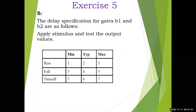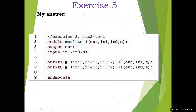Looking at the answer, the module name is mux2to1. Output is OUT, inputs are In1, In0, and select line S. Only one output and three inputs. Using BUFIF1 and BUFIF0 format, delay is included using the rise delay with minimum, typical, and maximum values. The colon operator is used between min:typ:max values and a comma between each delay specification. So: 1:2:3, 3:4:5, 5:6:7 — meaning rise delay minimum was 1, typical 2, maximum 3.